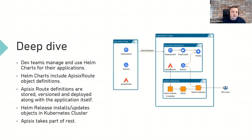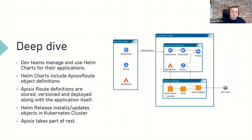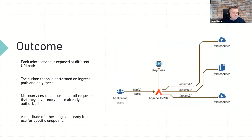At a technical level, dev teams manage and use Helm charts for their applications. Helm charts contain manifests for every object needed to successfully deploy the application. A Helm release installs those objects along with APISIX route objects exposing selected services via an APISIX gateway. The APISIX ingress controller, working in a different namespace, manages APISIX route objects from all namespaces and provisions the configuration onto APISIX. API users can then communicate with exposed services through the API gateway. The most important thing is that application manifests are stored and versioned, and deployed along with the definitions of how the application is exposed via the API gateway.